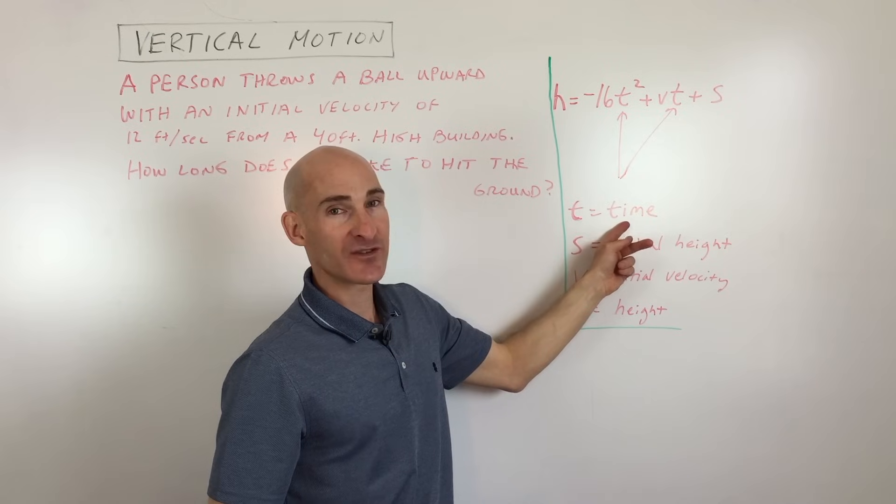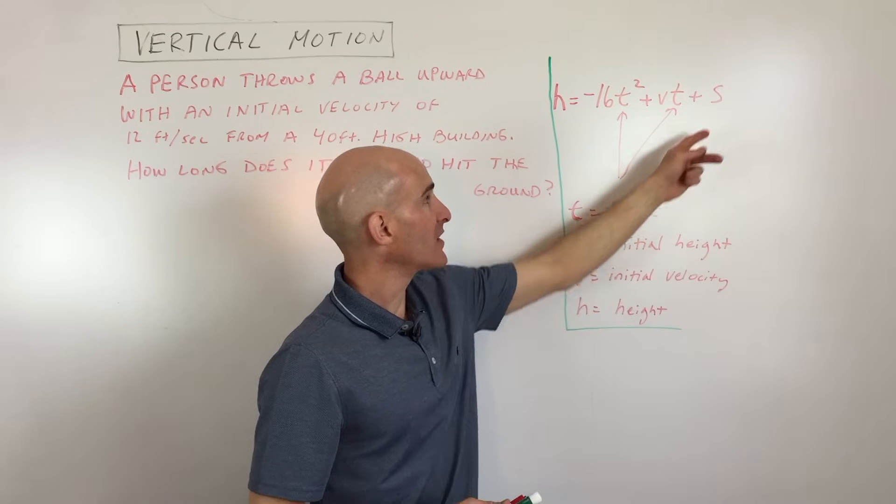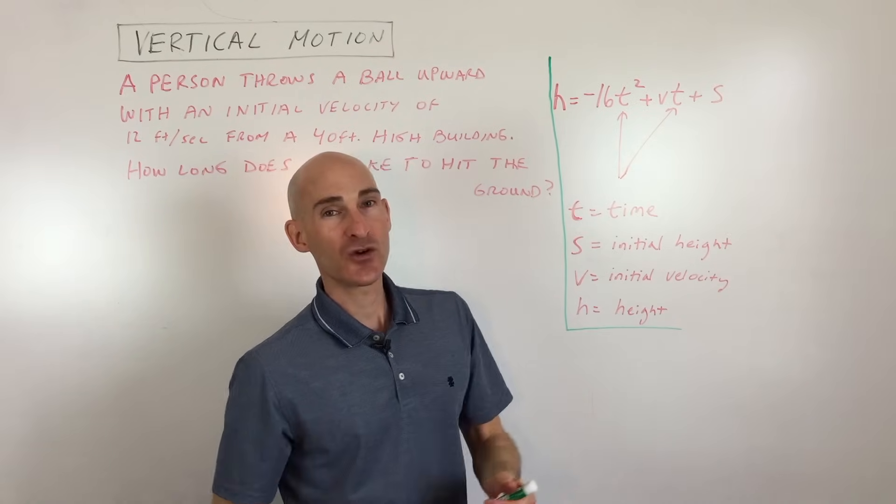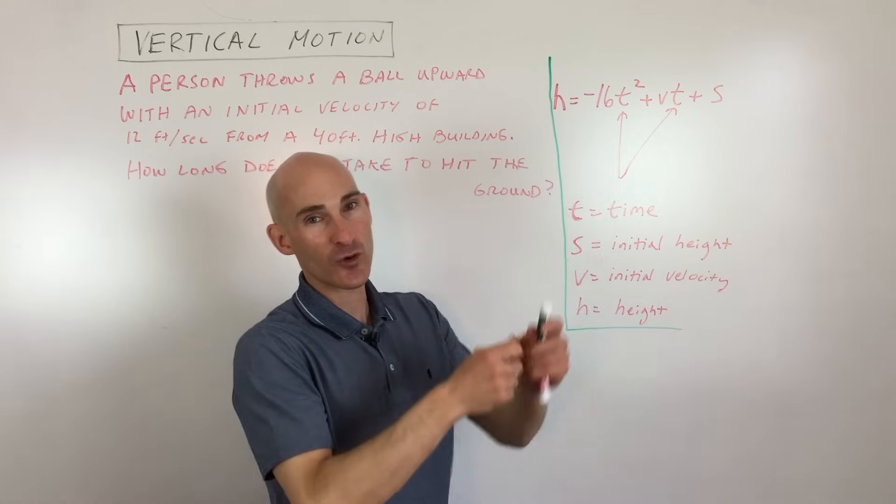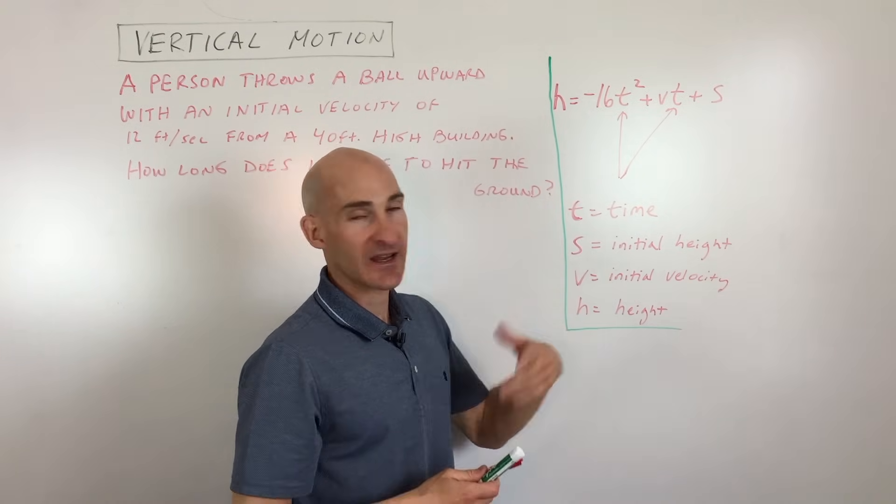So t is the time, oftentimes in seconds. s is the initial height, that's the starting height. And then v is the initial velocity, so like when it leaves your hand, let's say the item or when you launch something, like an arrow. And then h is the height at any given time.